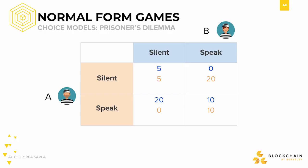Finally, if both prisoners decide to turn the other in, they'll both face 10 years in prison. Since the prisoners are separated, they must make the decision individually and cannot coordinate with the other. So, what will the prisoners decide?